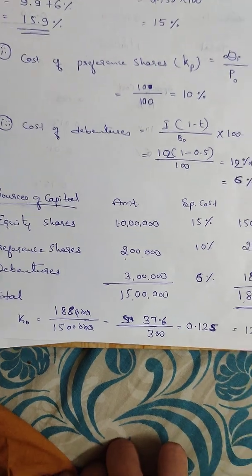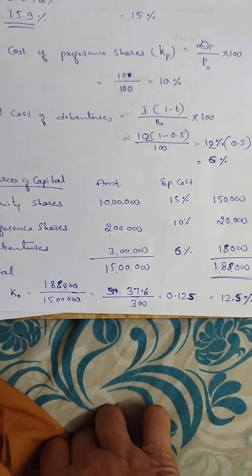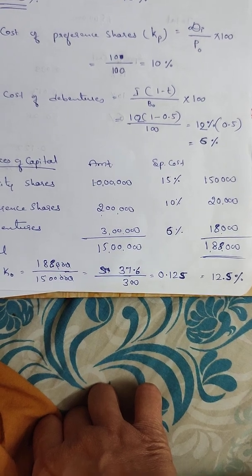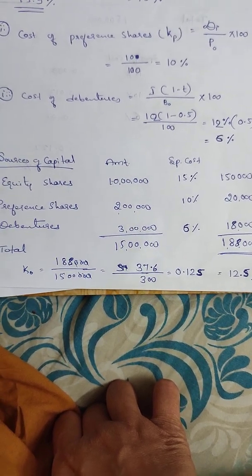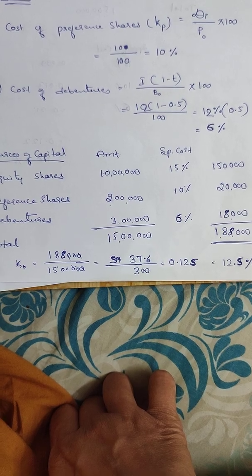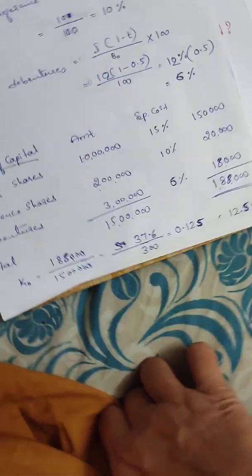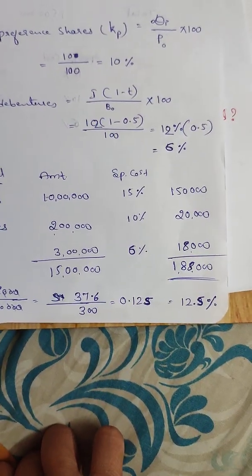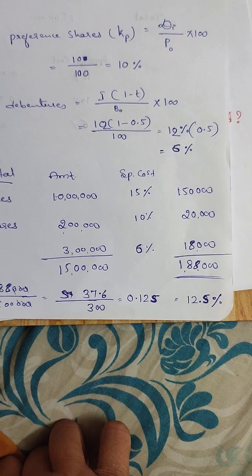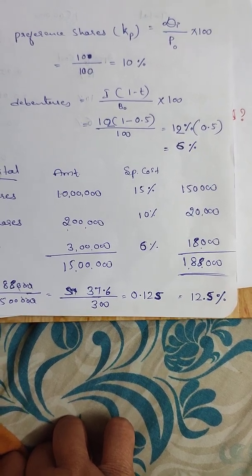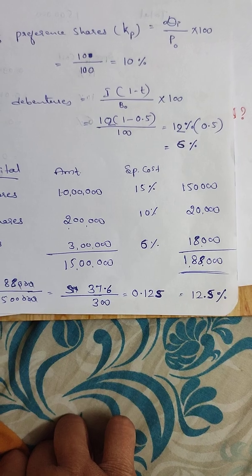Next, cost of preference shares: Kp is equal to DP divided by P0, into 100. The preference share dividend is Rs. 10. So 10 divided by the market price of 100 equals 10%. The cost of preference shares is 10%.